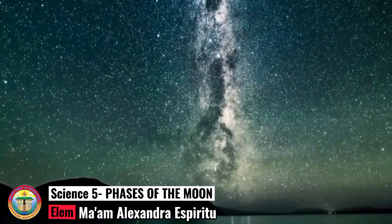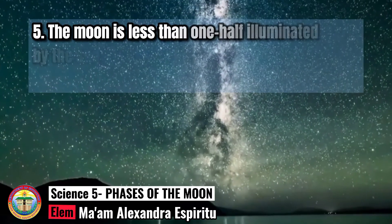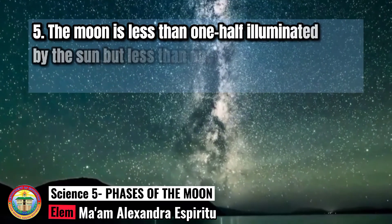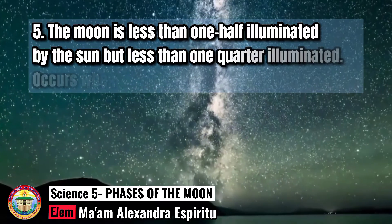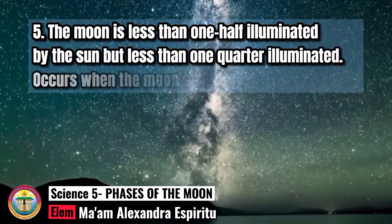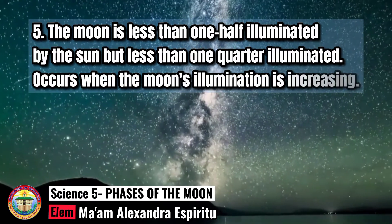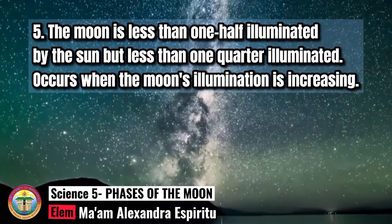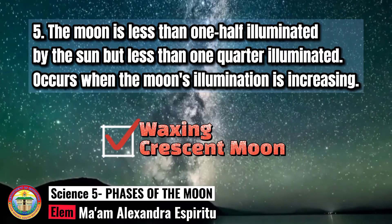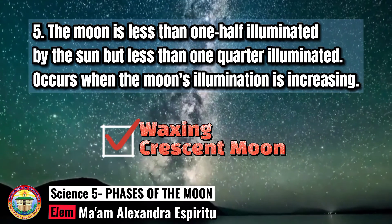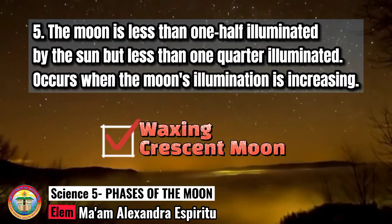Number 5: The Moon is less than one-half illuminated by the Sun, but more than one-quarter illuminated. It occurs when the Moon's illumination is increasing. Waxing Crescent Moon. If this is your answer, then you got the correct answer.